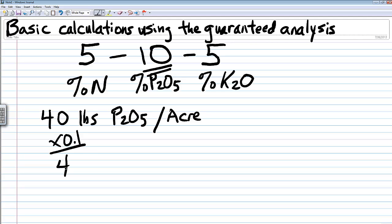Look at that number. Is there any way that 4 pounds of 5-10-5 can give me 40 pounds of phosphate? No. So let's get rid of that. This is where I always tell my students this is the common sense component of these calculations.